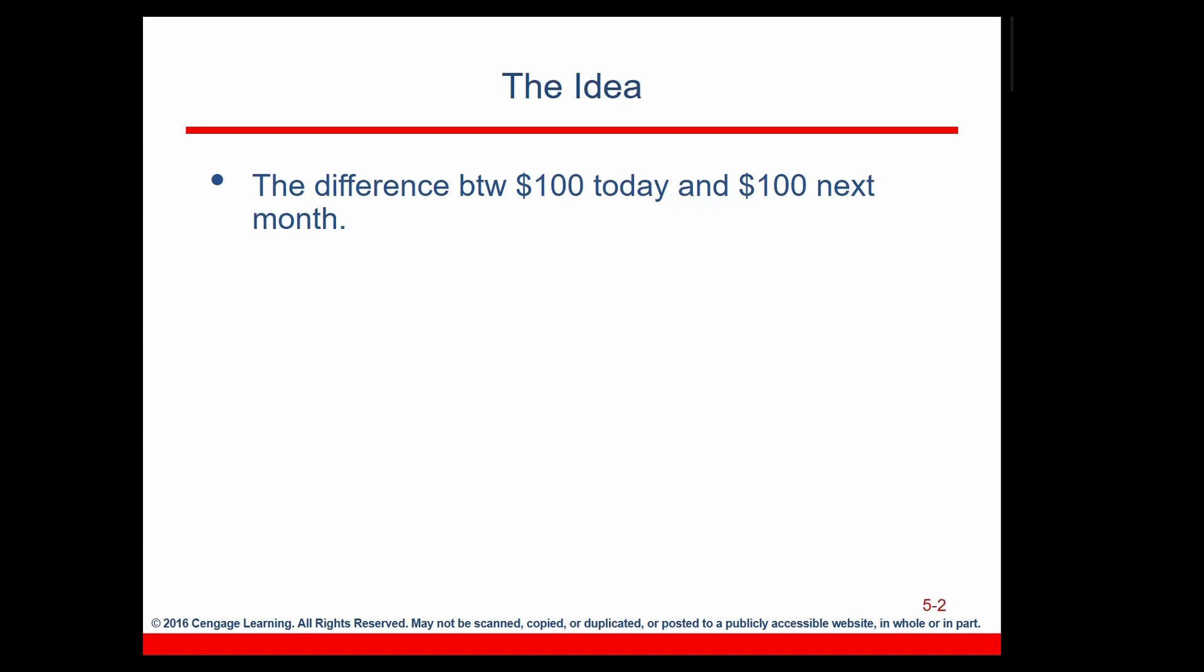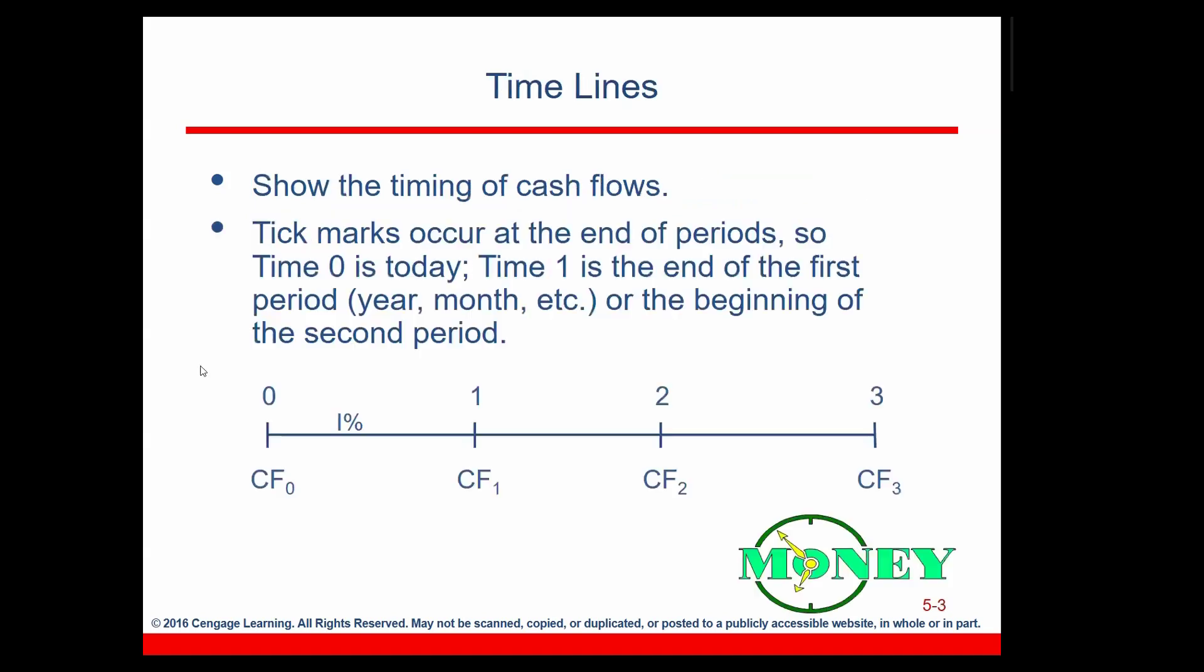To put the things into perspective, we are going to use something called a timeline. Timeline is a line which represents the times that we are dealing with. We write 0, 1, 2, 3. These are going to represent the time that we are dealing with. It might be weeks, months, or years, depending on the problem. And below the timeline, we write CF.